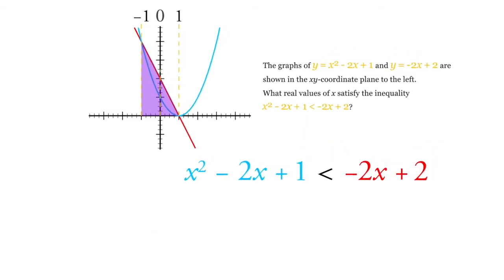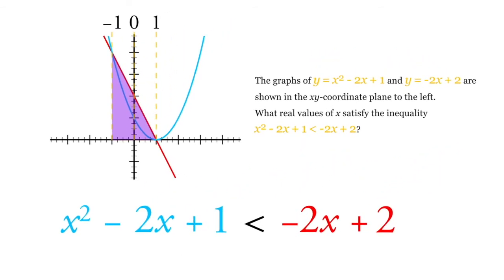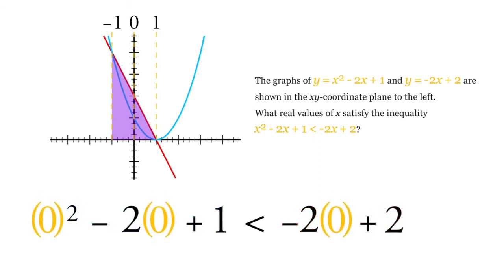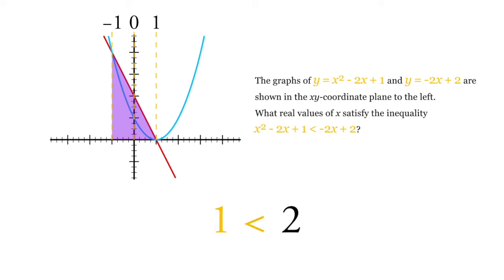Now, if you want to, you can just check 0 because 0 should work. We know 0 is here and we think it works, so let's plug it in. That's an easy one to plug in. This goes away and this goes away and this goes away, and we wind up saying that 1 is less than 2. That works. Our inequality is satisfied and we're happy.